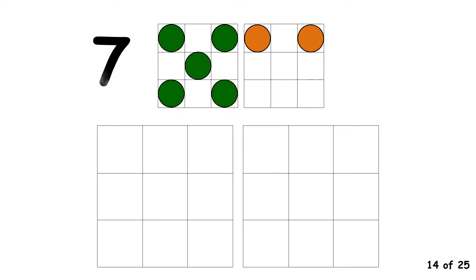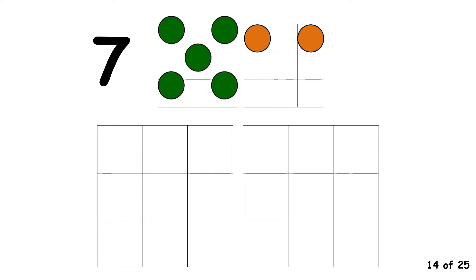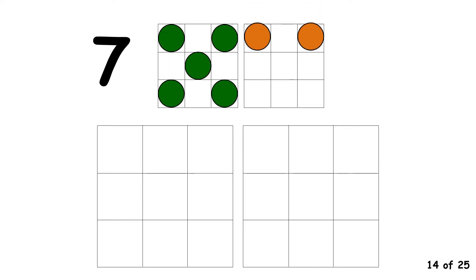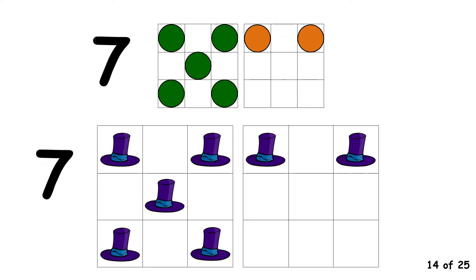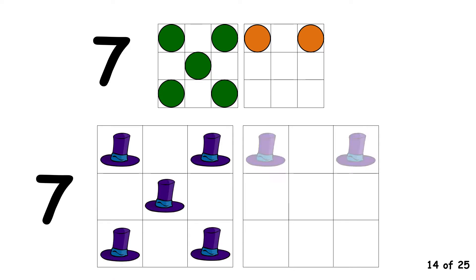7. 7 is made with 5 and 2. 7 is made with 5 and 2.